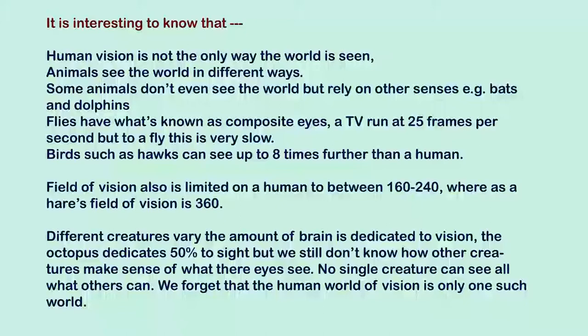Human vision is not the only way the world is seen — animals see it in very different ways. Some animals, like bats and dolphins, do not even rely primarily on vision. Flies have composite eyes; a TV at 25 frames per second is very slow to a fly. Birds such as hawks can see up to 8 times further than humans, and a hare's field of vision is 360 degrees versus the human range of 160 to 240 degrees.